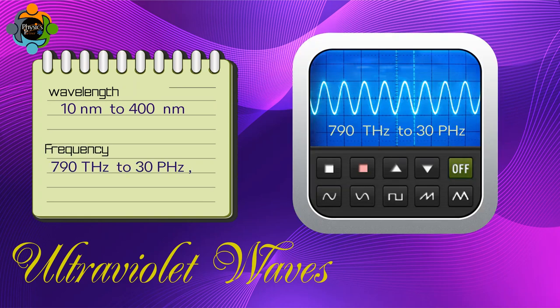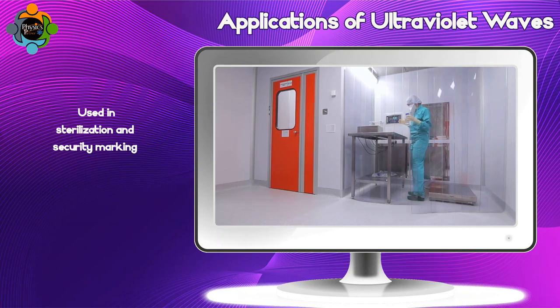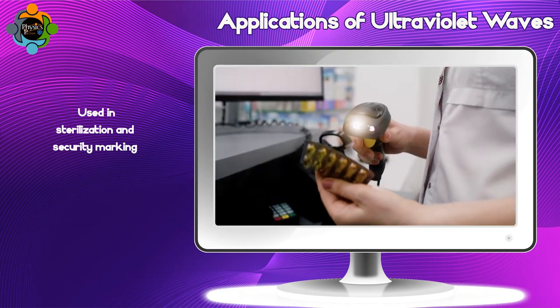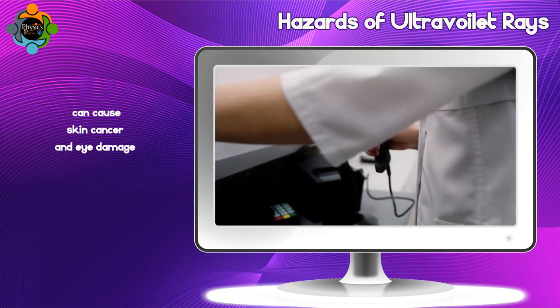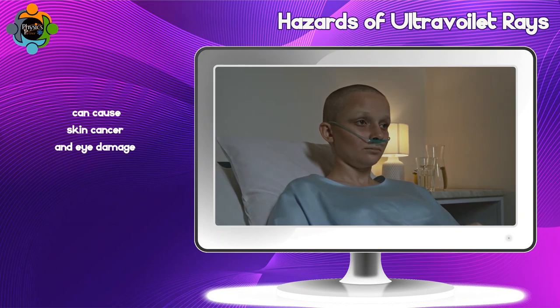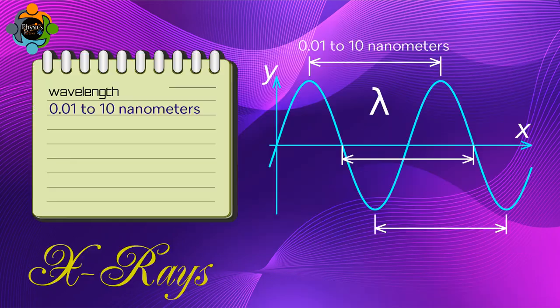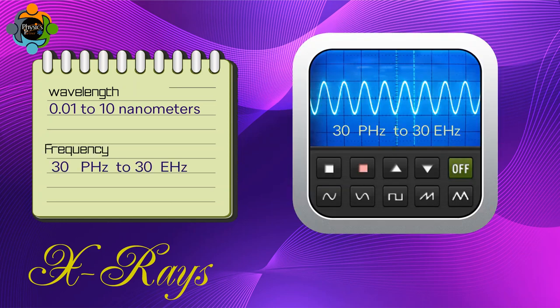Ultraviolet rays have a wavelength range of 10 to 400 nanometers and a frequency range of 790 terahertz to 30 petahertz. They are used in sterilization and security marking. However, they can cause skin cancer and eye damage.